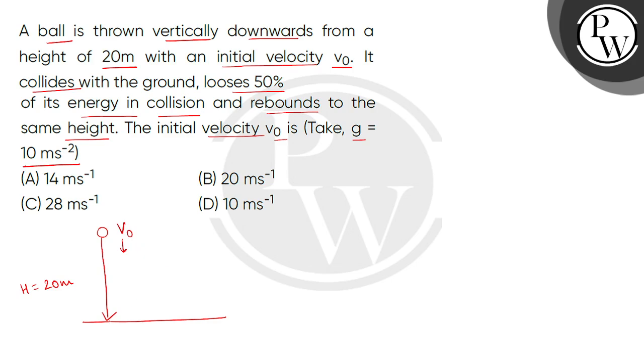Now, when this ball collides with the ground, it loses 50% of its energy. Then, when it rebounds to the same height, it means again at the height of 20 meter. So, we have to find what is the initial velocity value.